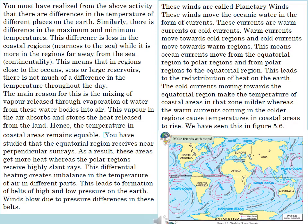Hence, the temperature in coastal areas remains equable. The equatorial region receives near-perpendicular sun rays and gets more heat, whereas the polar regions receive high slant rays. This differential heating creates imbalance in the temperature of air in different parts, leading to formation of belts of high and low pressure. Winds blow due to these pressure differences — these are called planetary winds. These winds move oceanic water in the form of currents, which are warm currents or cold currents. Warm currents move towards cold regions and cold currents move towards warm regions, redistributing heat on the earth.